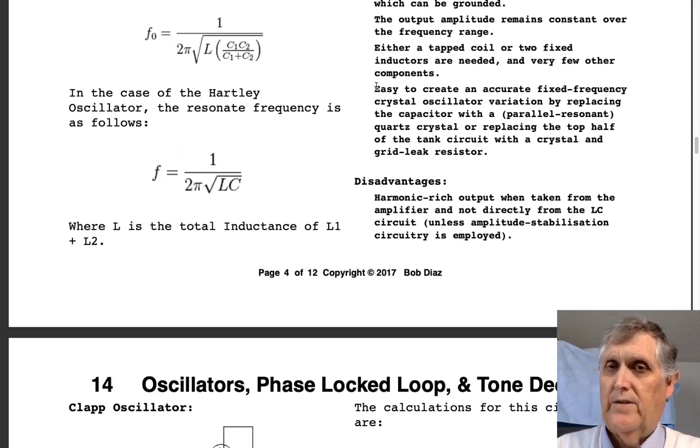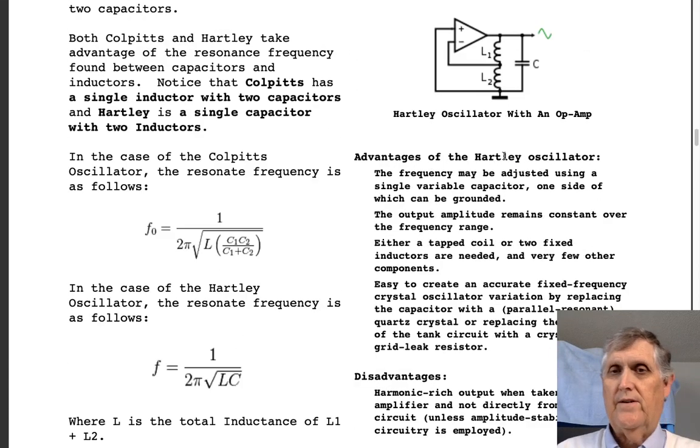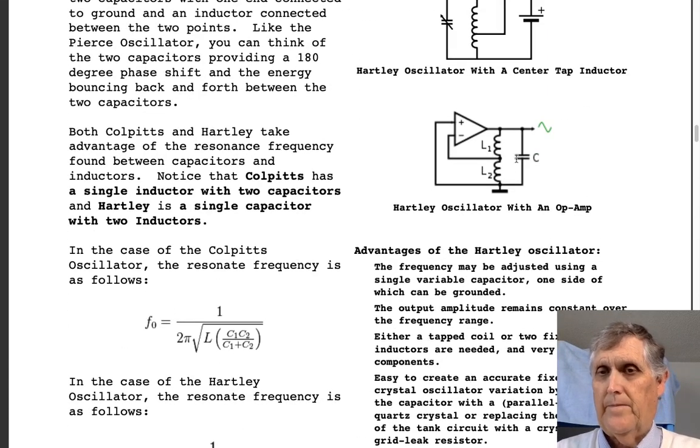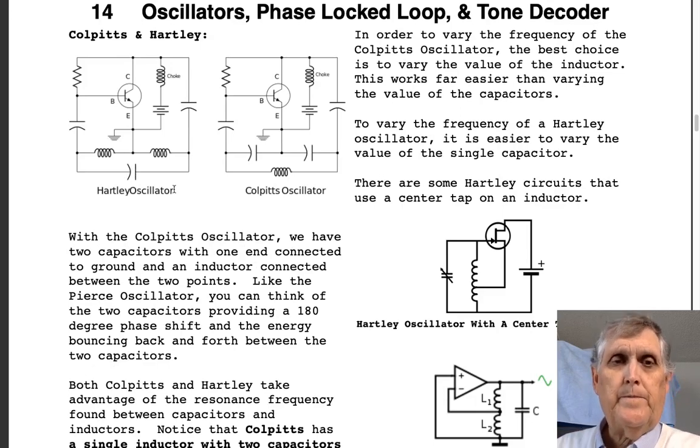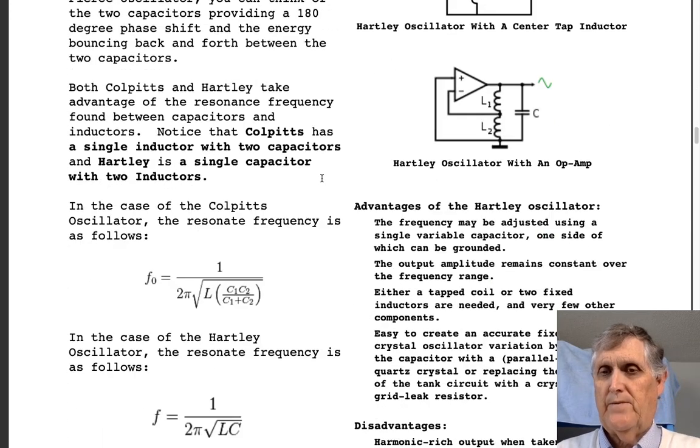It's also easy to create an accurate fixed-frequency crystal oscillator variation by replacing the capacitor with a parallel resonant quartz crystal or replacing the top half of the tank circuit with a crystal and a grid leak resistor. In a nutshell, we could put a crystal here or you could put it here, for example. Those are examples of what you could do.